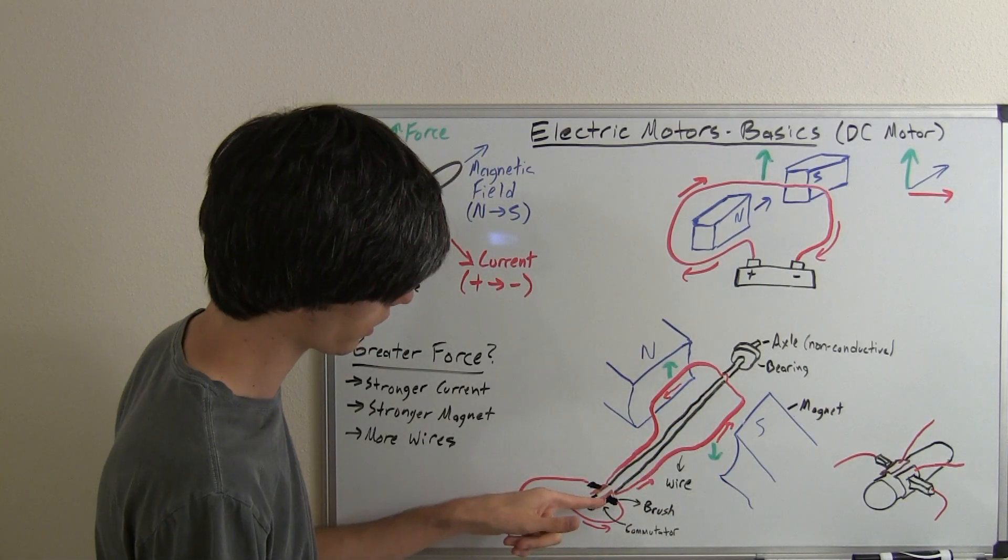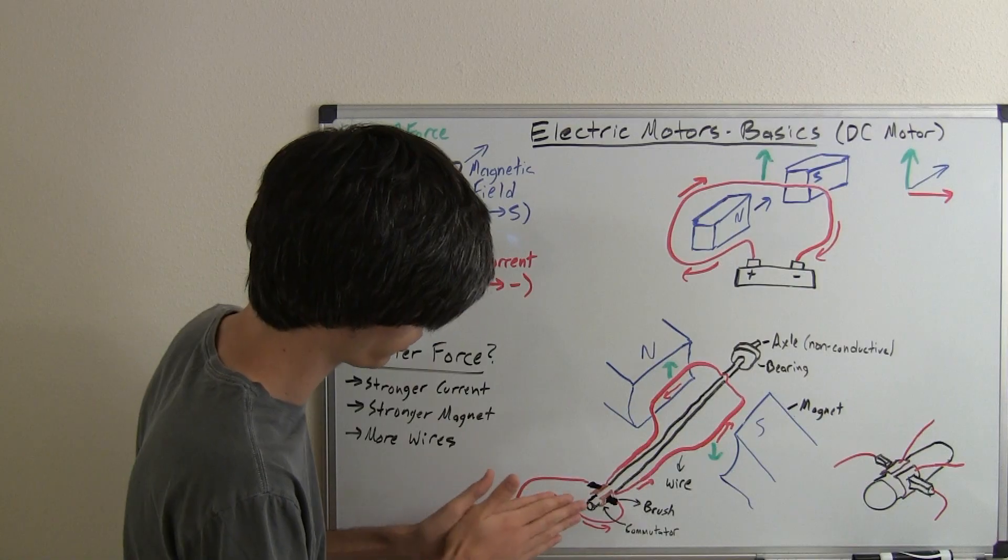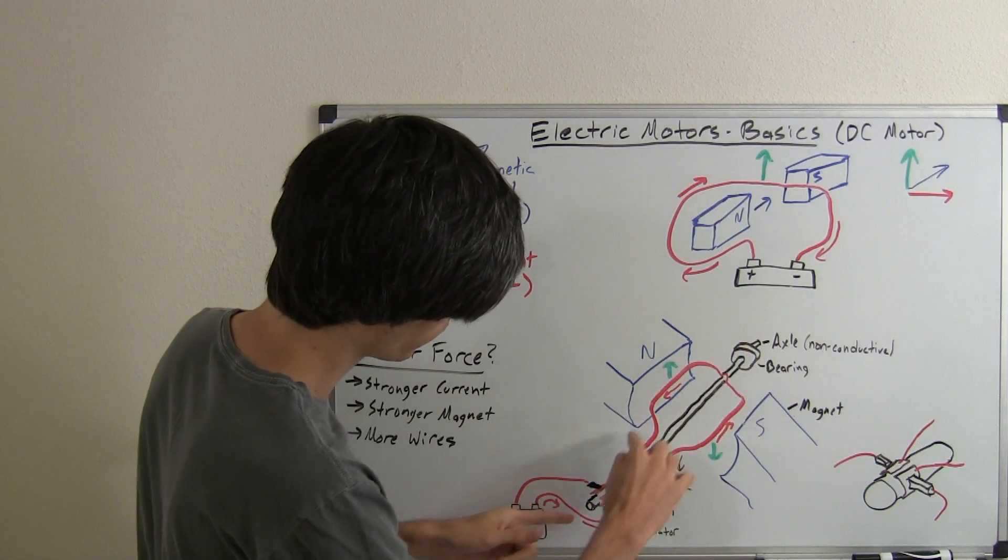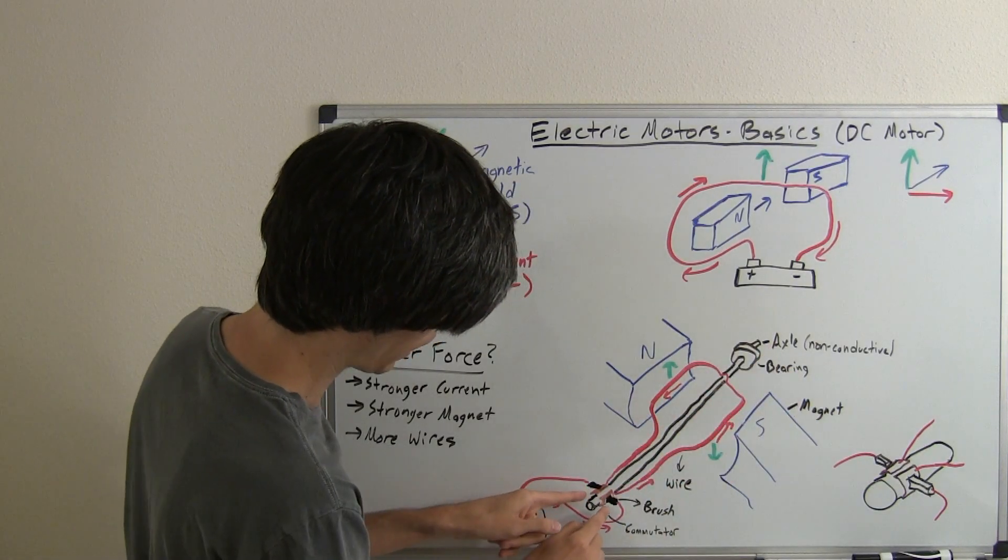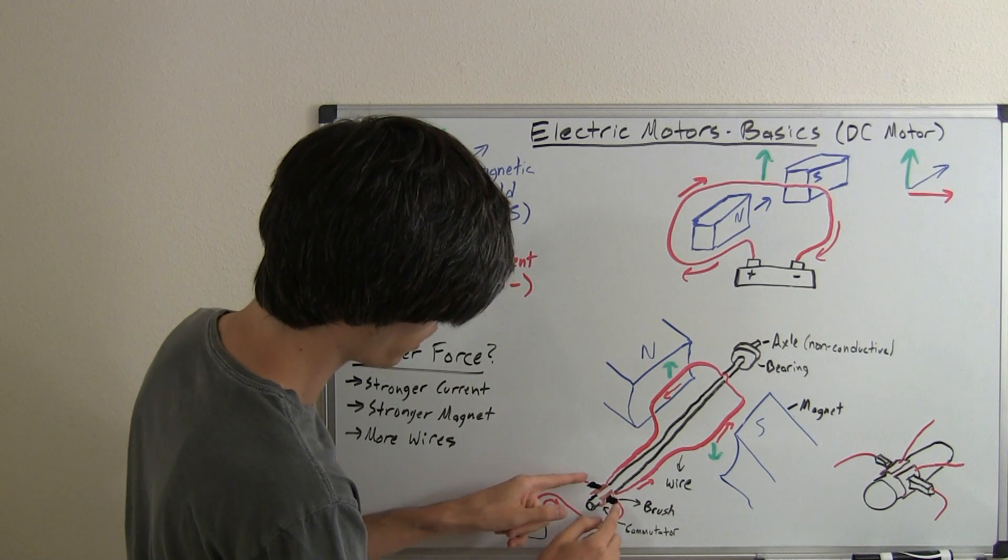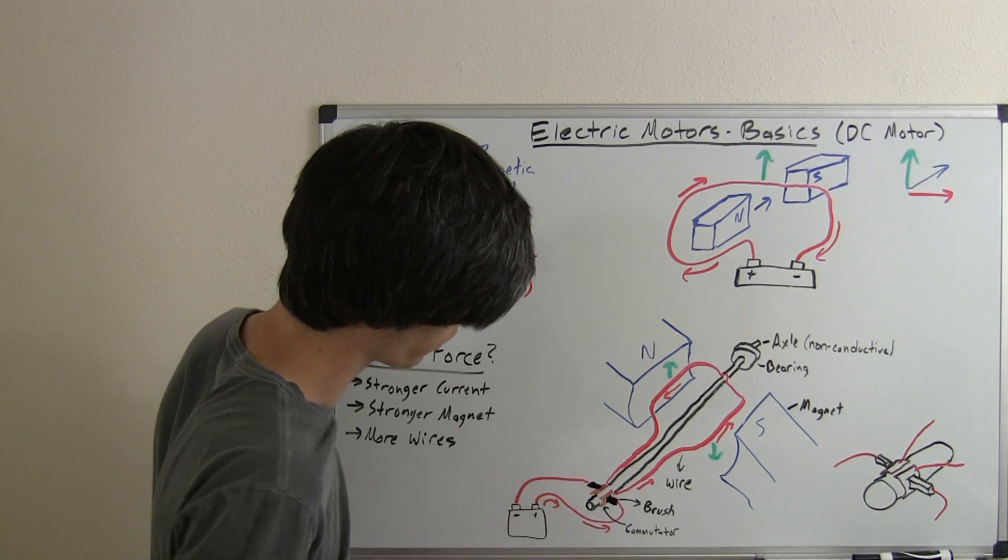are connected to this axle. This axle is non-conductive, whereas these commutators are conductive, so current can pass through them. So all of this rotates as one, and then these brushes and wires here do not rotate. They stay where they are, they're stationary.